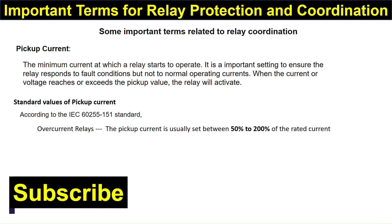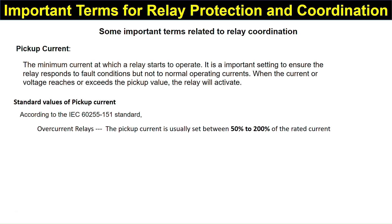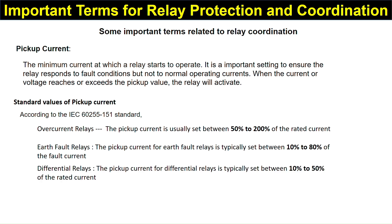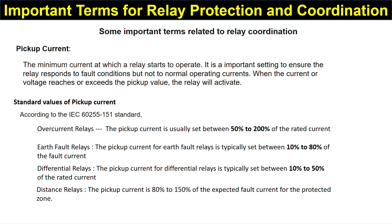Standard values of pickup current according to IEC 60255-151: for overcurrent release, pickup current is usually set between 50% to 200% of rated current. For earth fault release, it is typically set between 10% to 80% of fault current. For differential release, it is typically set between 10% to 50% of rated current. For distance release, it is 80% to 150% of the expected fault current for the protected zone.